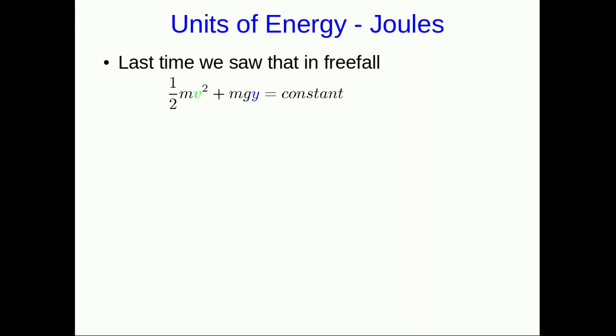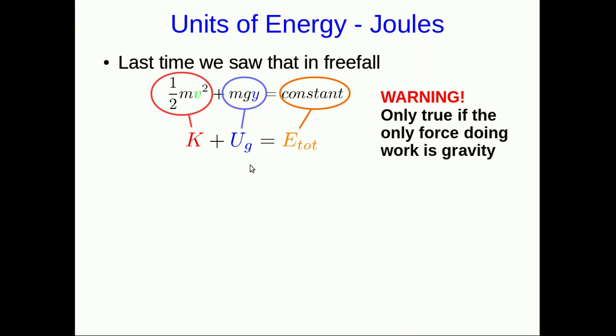At the end of the last lecture we saw that this expression here, half mv squared plus mgy, turned out in freefall to be constant. We identified this constant as our total energy, where this piece, the half mv squared, is our kinetic energy, the energy of motion, and mgy is our gravitational potential energy. Let me warn you that this is really only true in cases where gravity is the only force doing work.